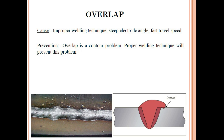Overlap occurs when weld metal flows beyond the weld toe without fusing with the base metal. Causes include improper welding technique — typically from an unskilled welder — and slow travel speed, which causes loss of control. Prevention: proper welding technique will prevent this problem. Repair: remove the excess overlap by grinding and ensure the welder uses proper technique.